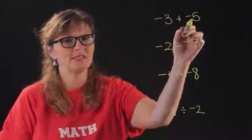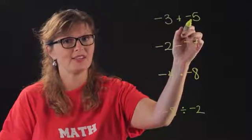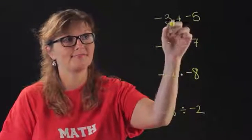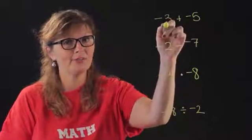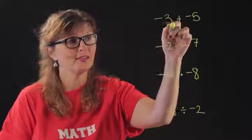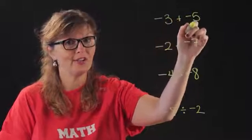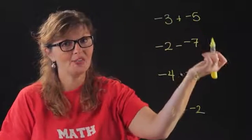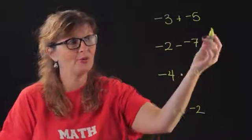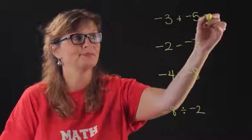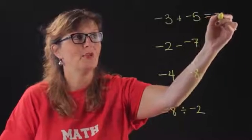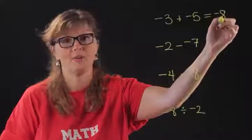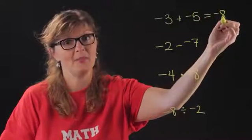Negative three plus negative five is like saying: I borrowed three dollars from you today, I borrowed five dollars from you tomorrow, so how much did I borrow from you total? I borrowed eight dollars from you because I'm kind of a bum.